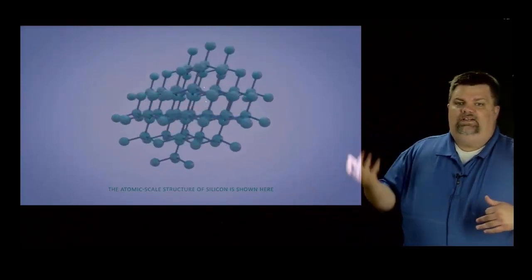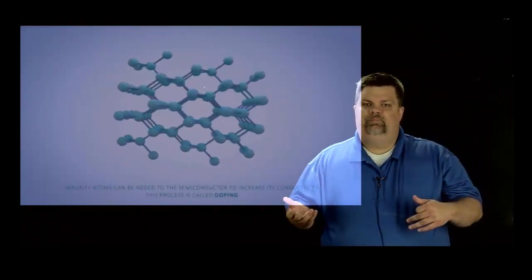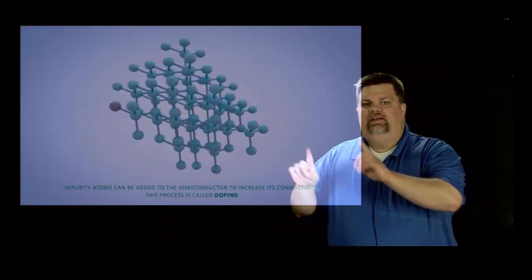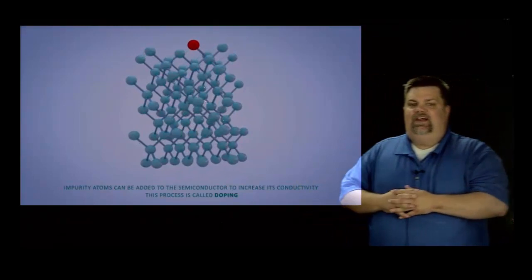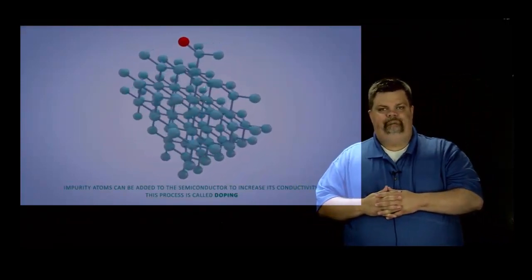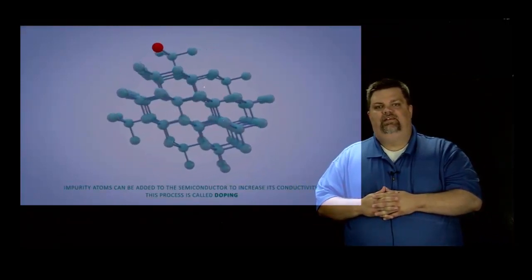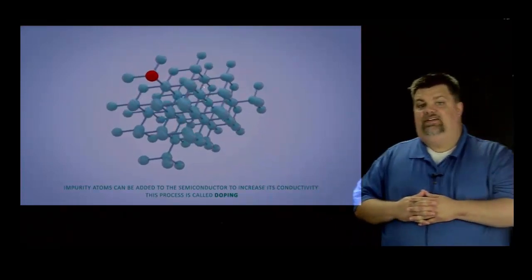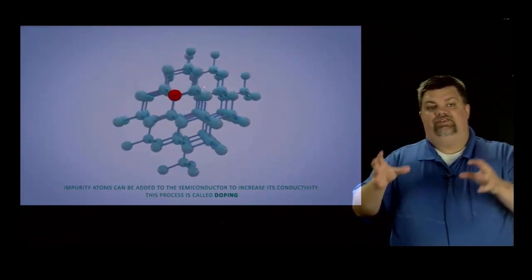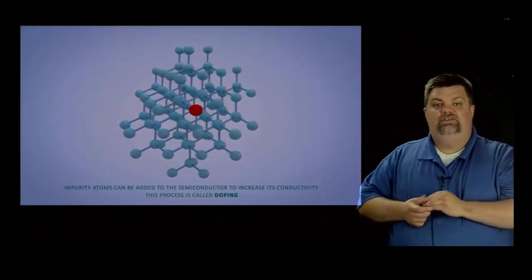If we look at the atomic structure here and I just take one of those atoms, but we'll do more than one atom, and I remove it and replace it with another atom that has an extra electron or one that's lacking a valence electron, then that process is called doping.